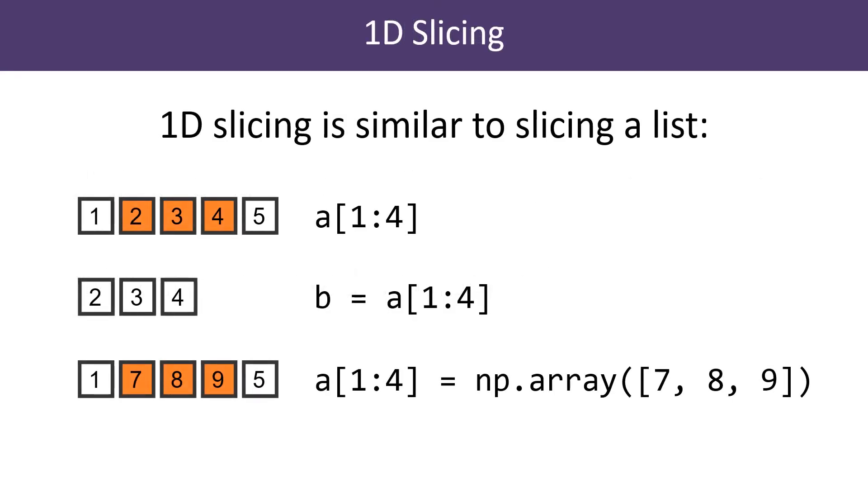Slicing a one-dimensional array is quite similar to slicing a list. It uses the same notation and has a similar effect. For example, the slice [1:4] selects elements from 1 up to but not including 4. That is, elements 1, 2 and 3.